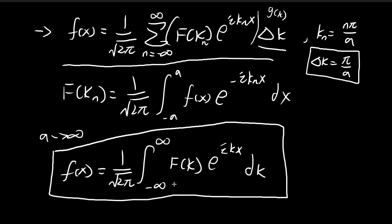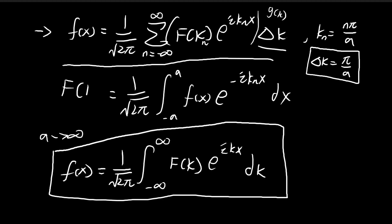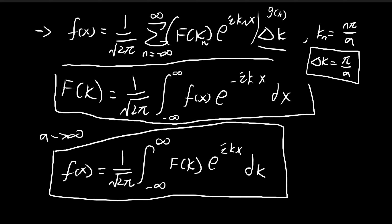As a tends to infinity, we can also rewrite f(k). We no longer need the subscript since it is now a continuous variable. The bounds become negative infinity to positive infinity. So this is the essence of Plancherel's theorem: you can represent f(x) using this integral form, where f(k) is given by the corresponding integral.